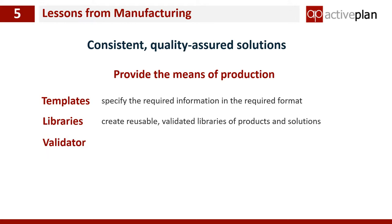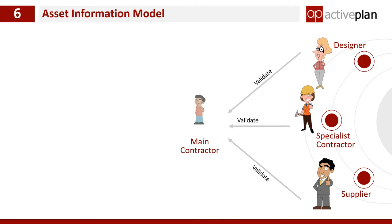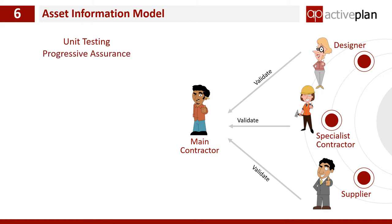We've also created a library management platform so suppliers can create their answers just once, quality assure those answers, and then apply them many times. The final tool in the toolbox is our validation application. Validator allows designers and the rest of the supply chain to validate their own files before they're sent — unit testing in the world of QA. So when the main contractor receives the files from all the different firms they will already have been tested by the authors and any issues already corrected. Partially completed submissions can be tested to ensure everyone's on the right track — this progressive assurance helps deliver a quality assured data model.